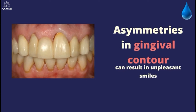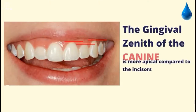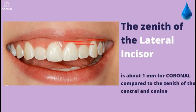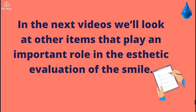Asymmetries in gingival contour can result in unpleasant smiles. The gingival zenith of the canine is more apical compared to the incisors. The zenith of the lateral incisor is about one millimeter more coronal compared to the zenith of the central incisor and canine. In the next videos we'll look at other items that play an important role in the aesthetic evaluation of the smile.